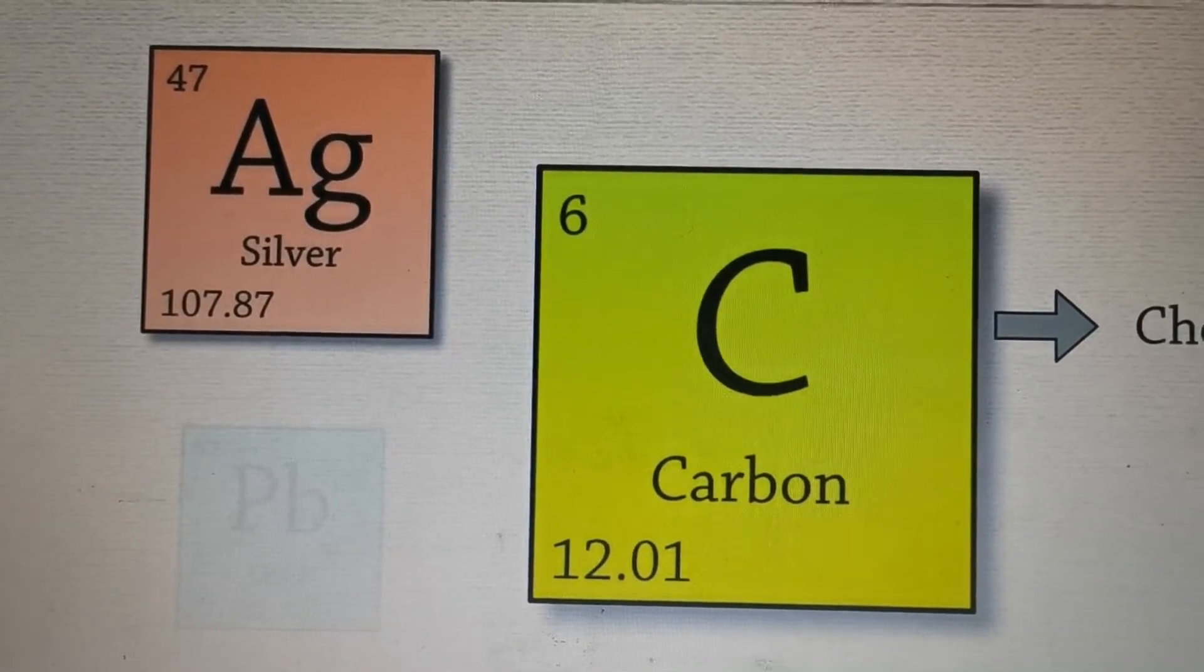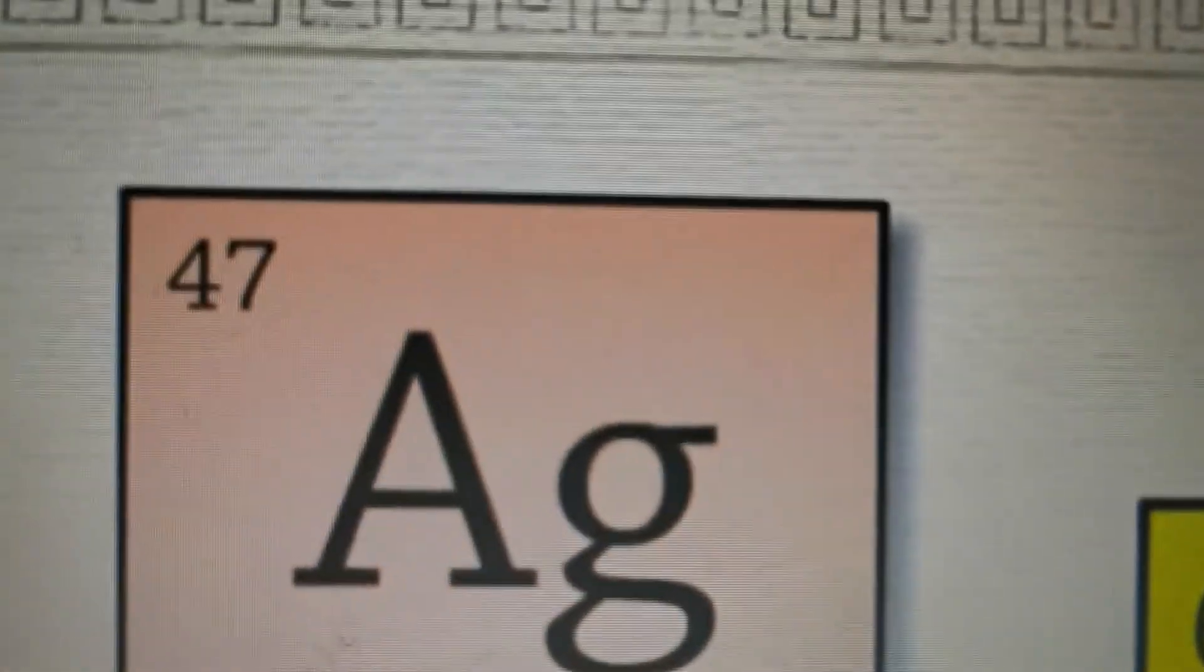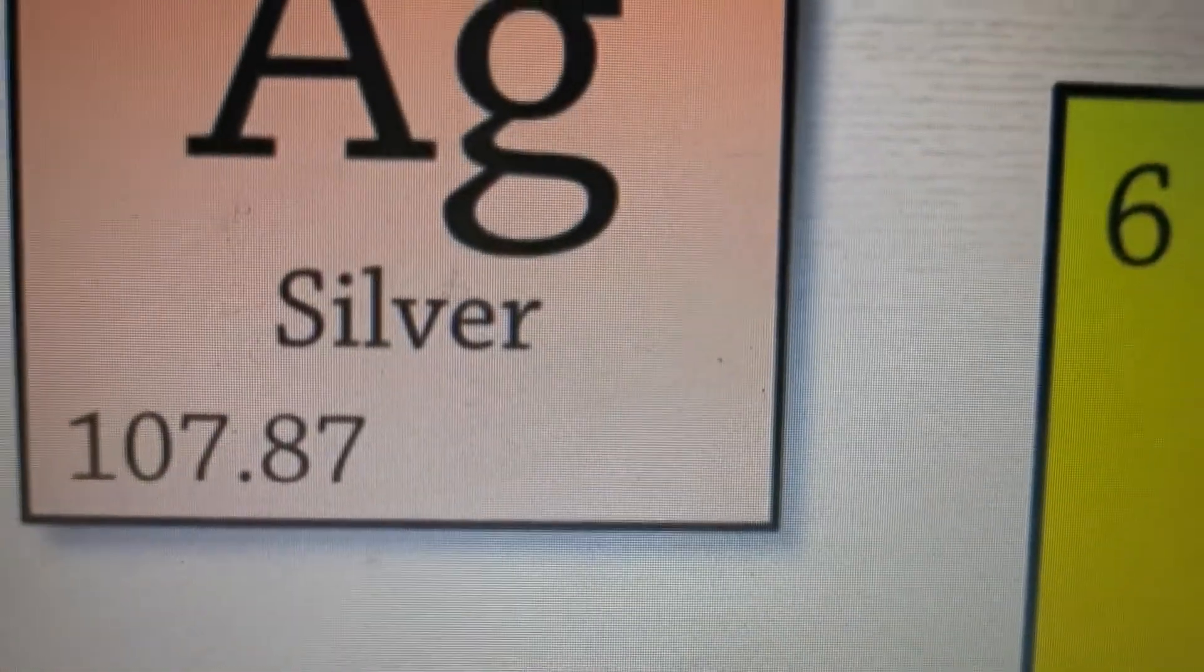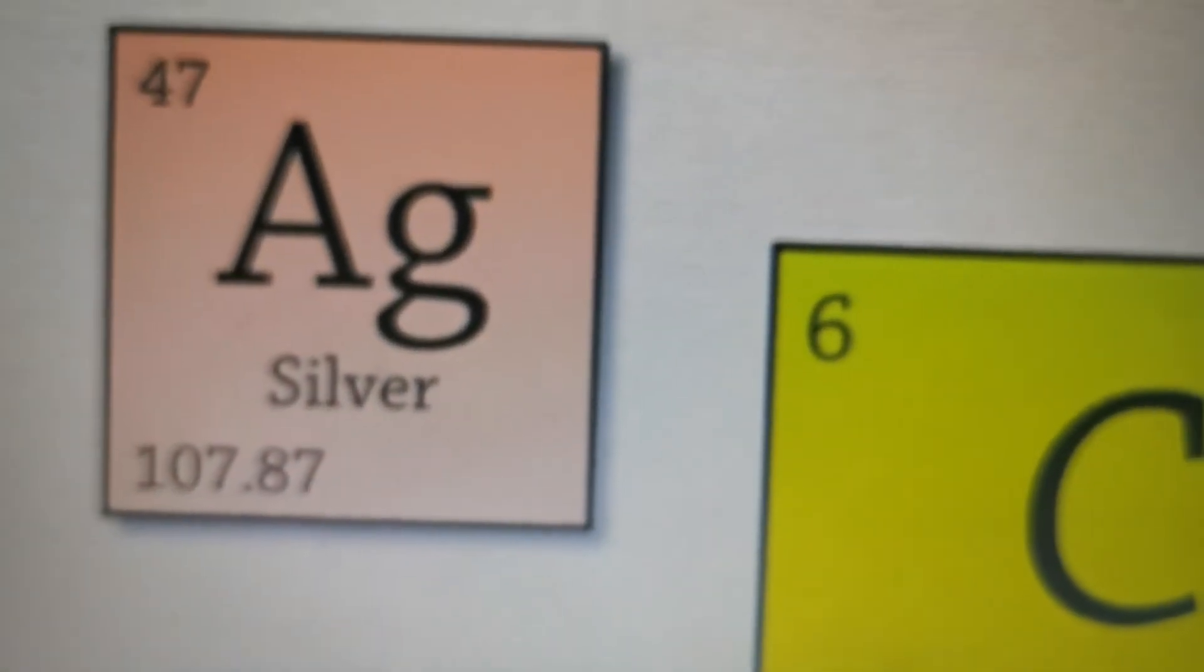What would you say is the atomic number? Can you see the number at the very top is 47, and the number at the bottom is your mass number, 107.87.